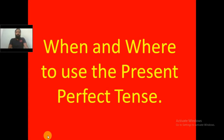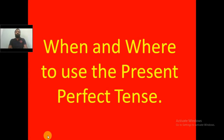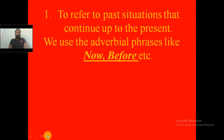We shall begin with when and where to use the present perfect tense — that is, we will be seeing the usages of present perfect tense. We have the first usage given here: to refer to past situations that continue up to the present. We use adverbial phrases like 'now', 'before', etc. in this particular usage.